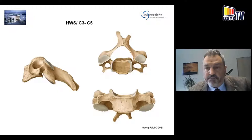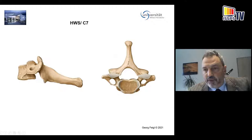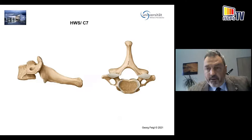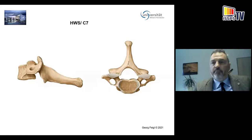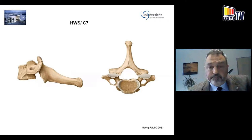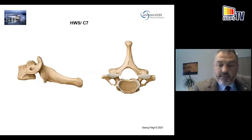Moving to C7, there is a change because you get no division of the spinous process. Anyway, there is also a change of the zygapophysial joint position and orientation, because in the cervical spine you get more of an oblique frontal plane, and then it has to turn into a truly frontal plane as you transition to the thoracic spine. Additionally, on this vertebra you can see the remnant of the anterior tubercle, which can develop into a rib and enlarge the area, changing your ultrasound image entirely.